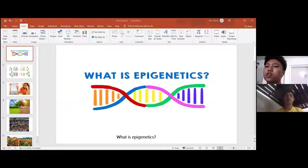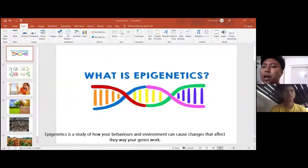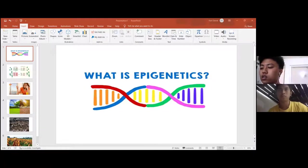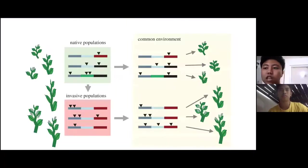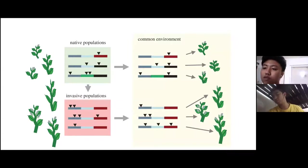What is epigenetics? Your genes play an important role in your health, but so do your behaviors and environment, such as what you eat and how physically active you are. Epigenetics is the study of how your behaviors and environment can cause changes that affect the way your genes work. Unlike genetic changes, epigenetic changes are reversible and do not change your DNA sequence, but they can change how your body reads a DNA sequence. The primary way epigenetics could play a role in plant invasions is by contributing to phenotypic variation and adaptation of invasive plant populations, which requires linking epigenetic mechanisms to the traits of invaders.